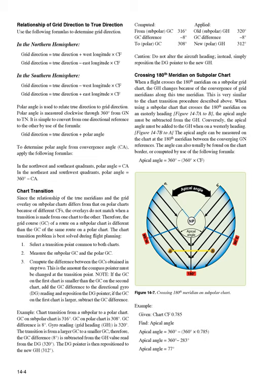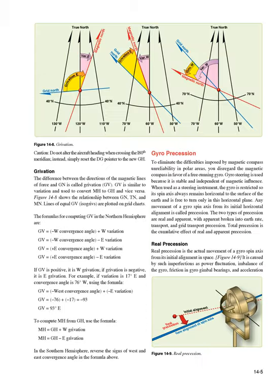The apical angle can also usually be found on the chart border, or computed by use of the following formula: apical angle equals 360 degrees minus (360 degrees times CF). Example — given chart CF of 0.785: apical angle equals 360 degrees minus (360 degrees times 0.785) equals 360 degrees minus 283 degrees equals 77 degrees. Caution: do not alter the aircraft heading when crossing the 180th meridian; instead, simply reset the DG pointer to the new GH.